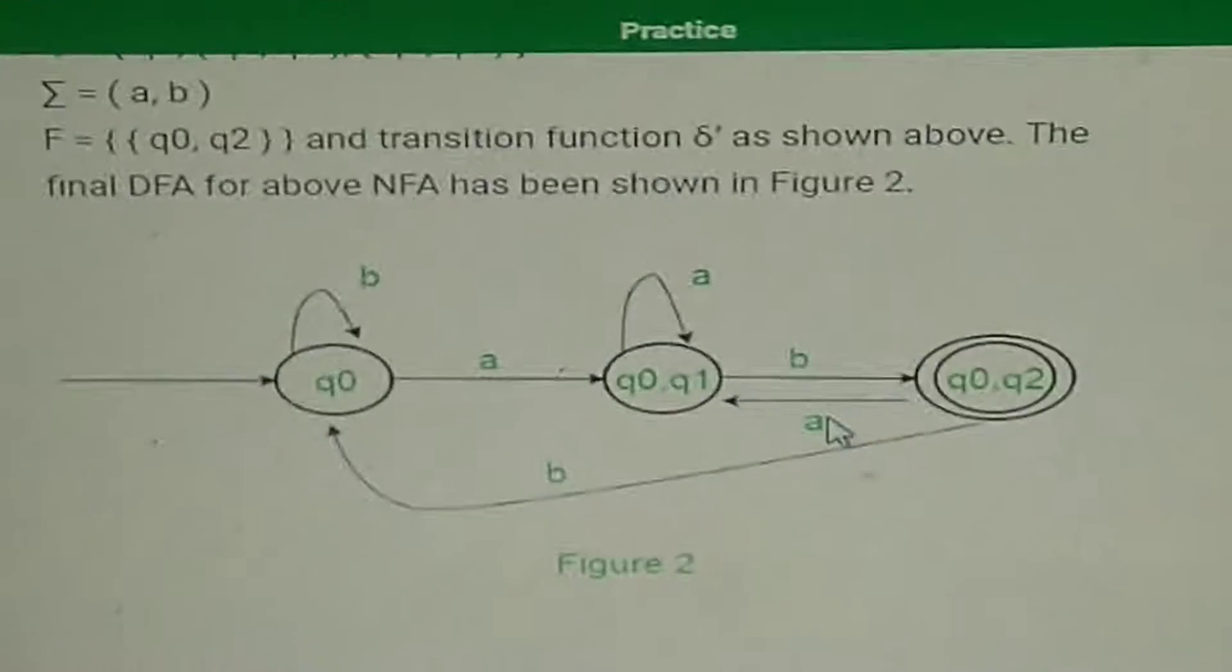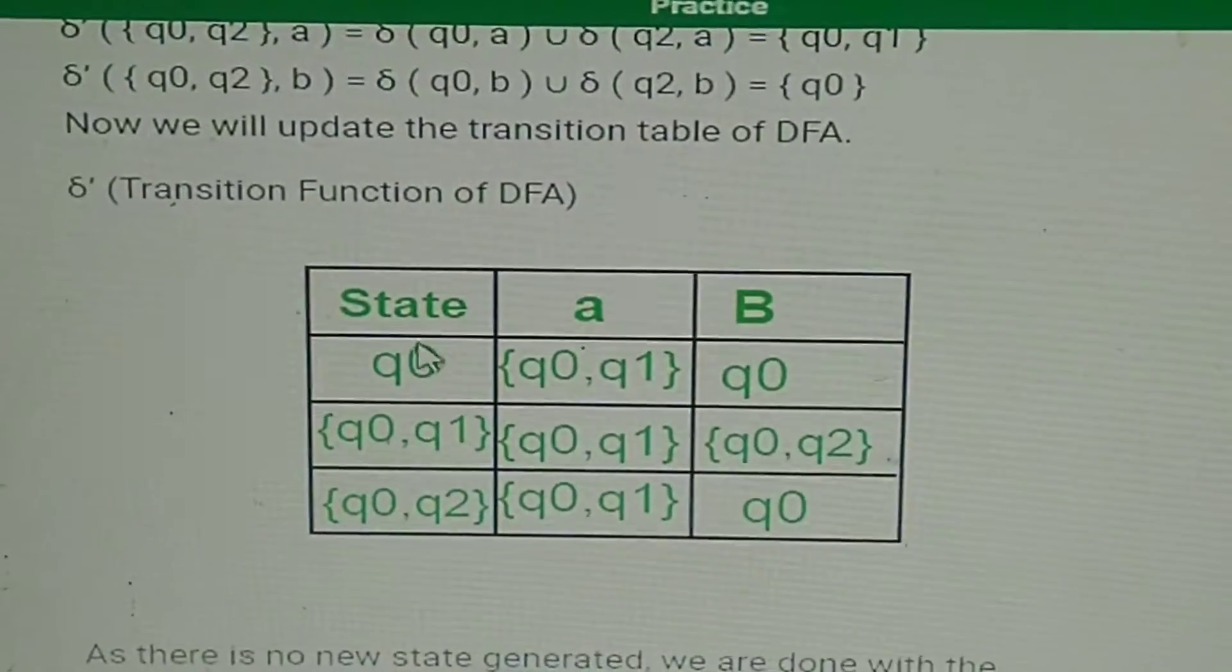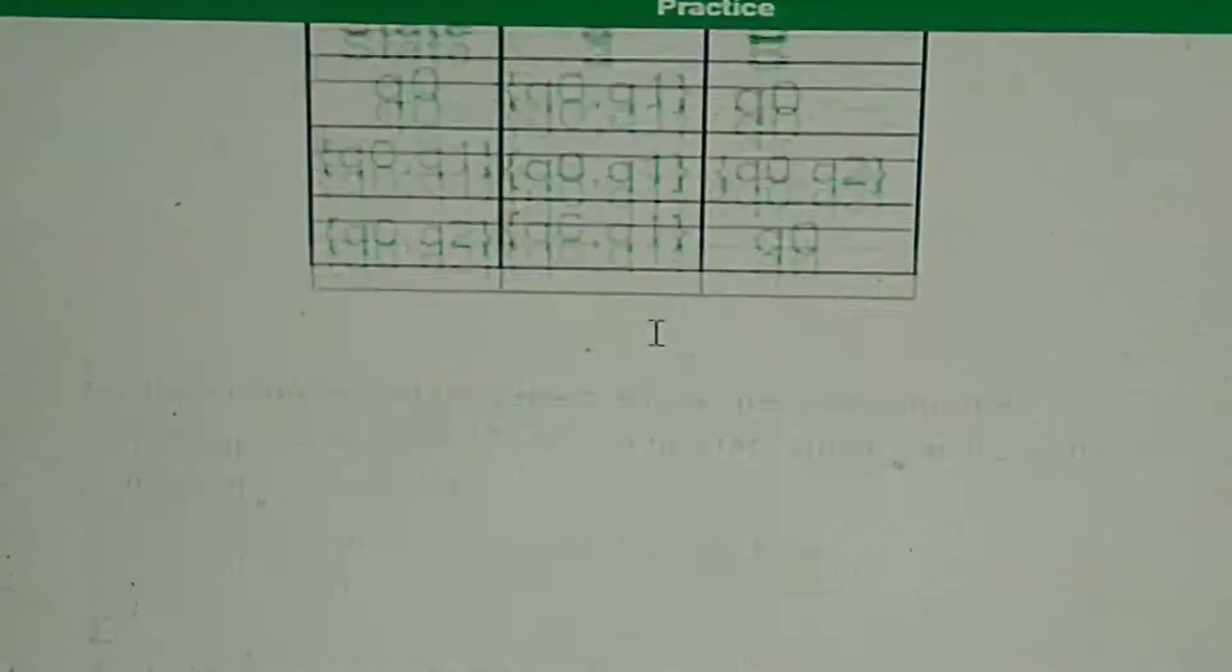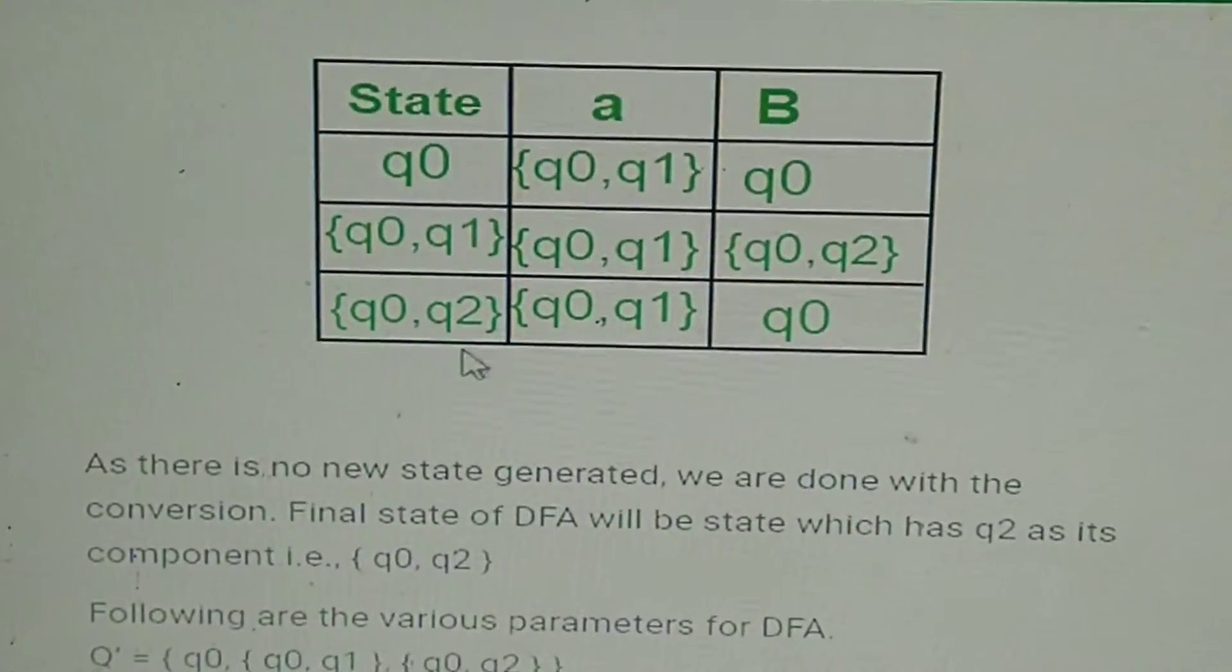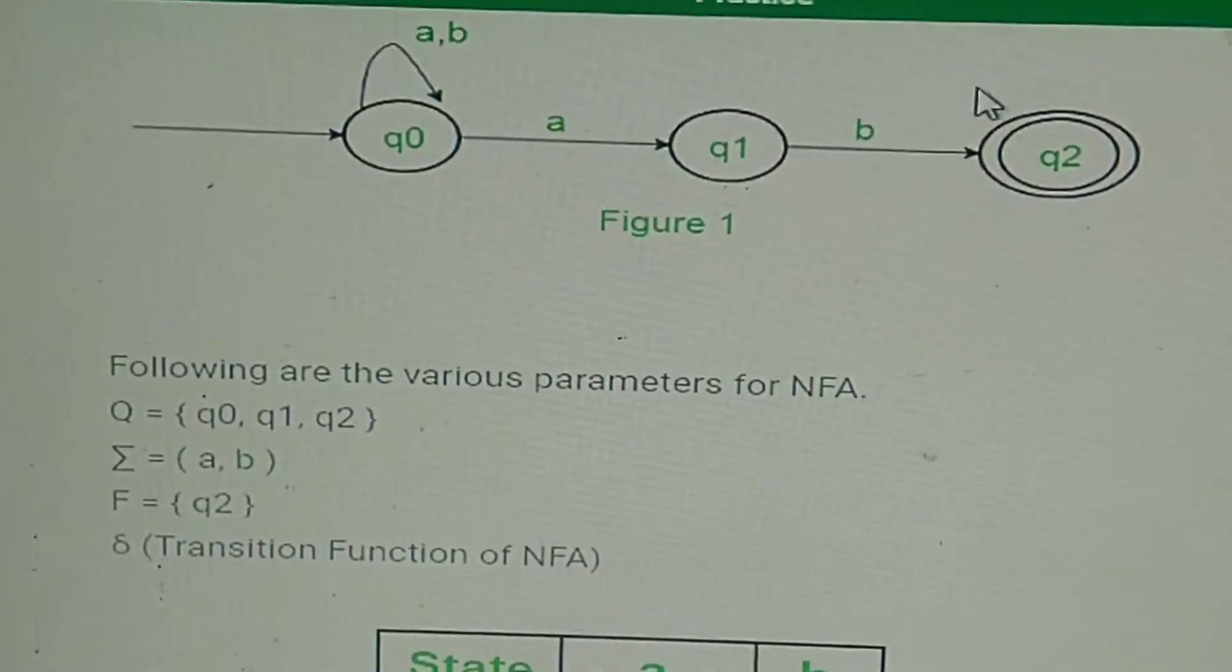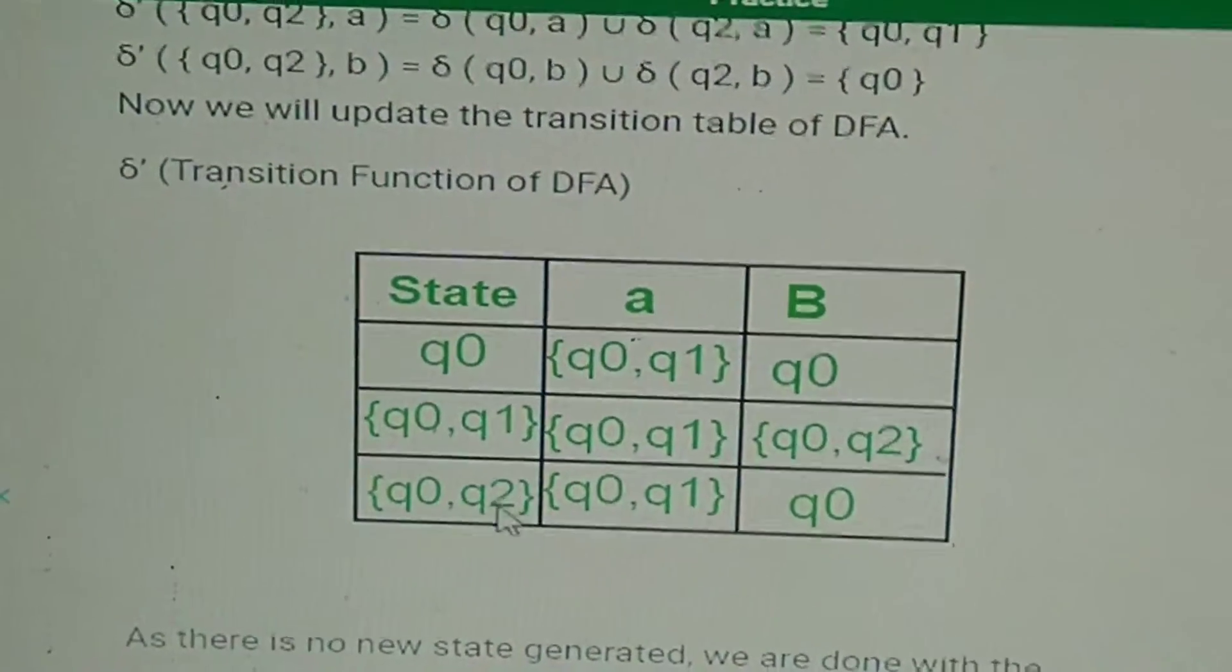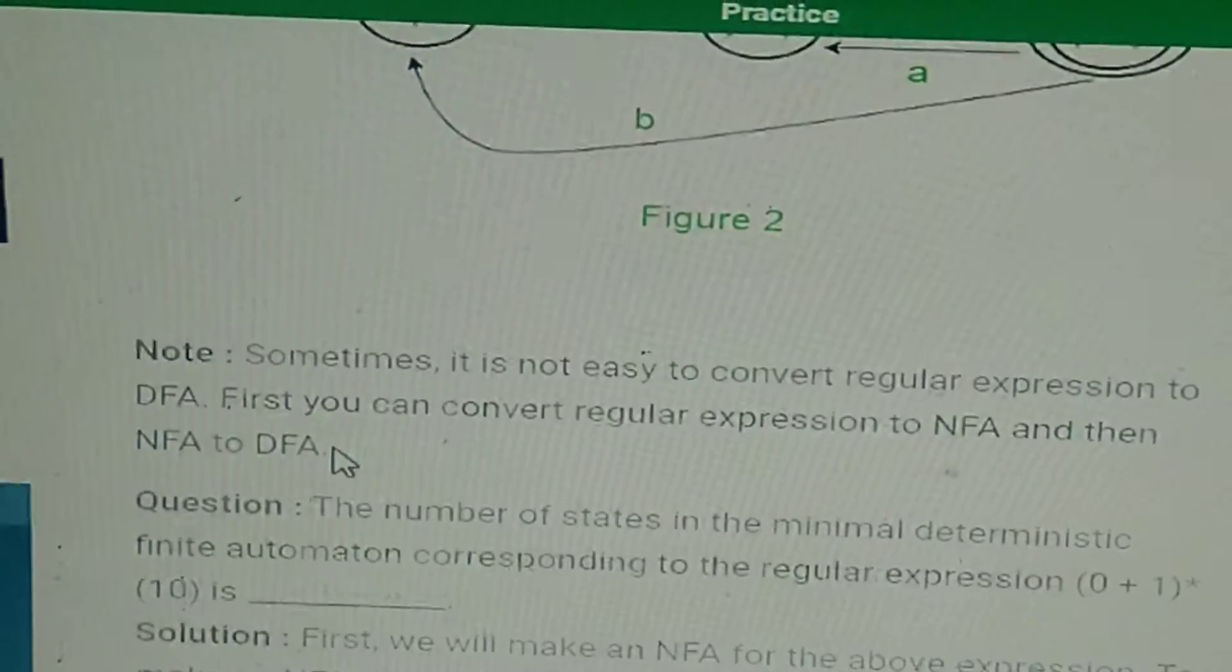Now you need to make the state transition diagram. You are giving 'a' to q0 and you'll get q0,q1, so you'll write it like this. Now the very important question is which will be your final states. Earlier, if you go back to your diagram, your final state was q2. Now in the final table, you are not having any q2 over here, but it is coming in this part. So wherever q2 will appear, you'll make that state the final state.